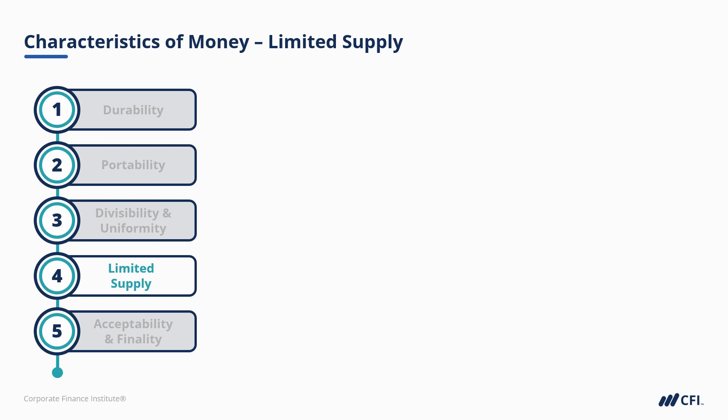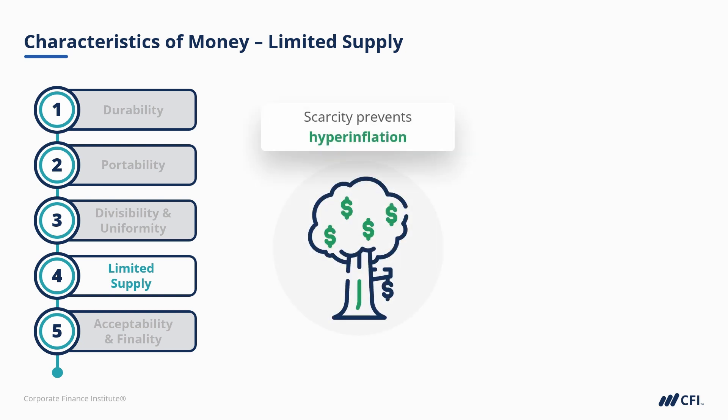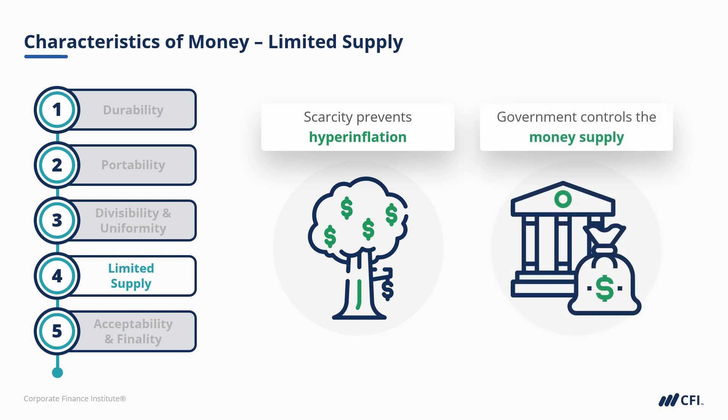Next is the characteristic of scarcity, or more accurately, limited supply. If money were to literally grow on trees, the value of that money would be worthless and no one would accept it. What you would see is constant and extreme price inflation, called hyperinflation in economist talk. This is also a reason that most currencies are issued only by the government in order to control the money supply. There are some jurisdictions where commercial banks are entrusted with physically printing money, but even those banks are strictly controlled by the local monetary authority.